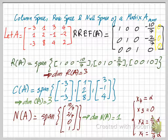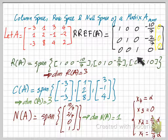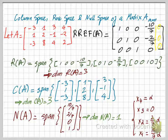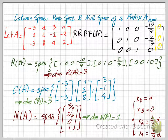You can verify this using the rank-nullity theorem. Since the dimension of the row space equals the dimension of the column space of A, which is 3, and there are four column vectors in matrix A, the dimension of the null space must equal 4 minus 3, which equals 1.